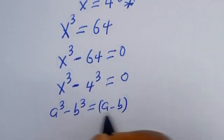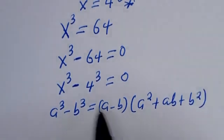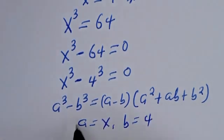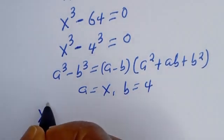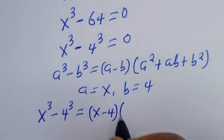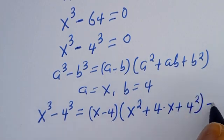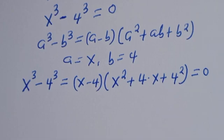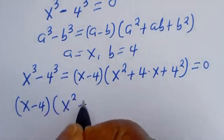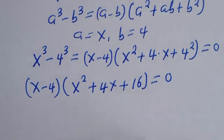Using the identity a³ minus b³ equals (a minus b)(a² plus ab plus b²), where a equals s and b equals 4, we substitute to get: (s minus 4)(s² plus 4s plus 16) equals zero.